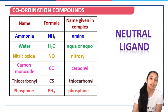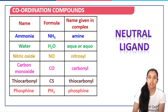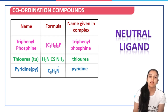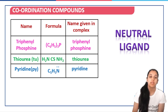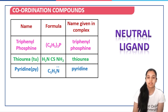Next, neutral ligands. Ammonia, NH3, is given the name amine in the complex. Water, H2O, is given the name aqua or aquo. Nitric oxide, NO, is called nitrosyl. Carbon monoxide, CO, is carbonyl. Thiocarbonyl, CS, is called thiocarbonyl. Phosphine, PH3, is called phosphine. Triphenylphosphine is called triphenylphosphine, where three phenyl rings are attached to the phosphorus atom. Thiourea, NH2-CS-NH2, is named thiourea in the complex. Pyridine, C5H5N, where nitrogen has the lone pair acting as the donor atom, is given the name pyridine in the complex.